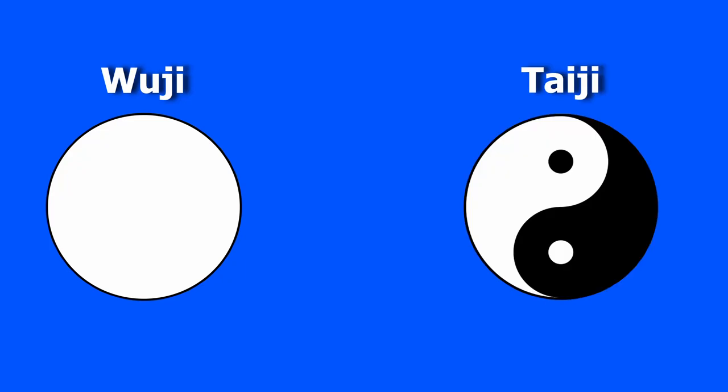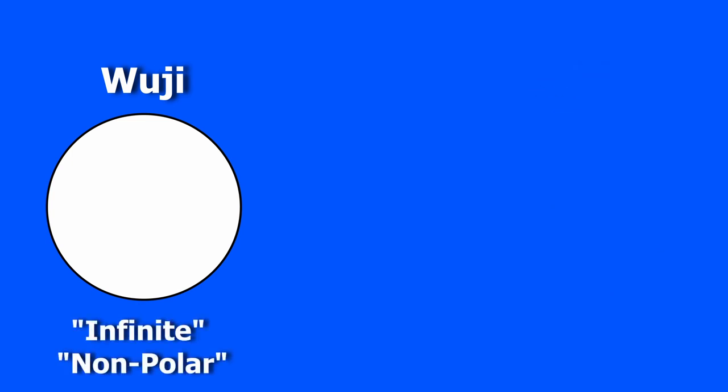Before understanding yin and yang, we first have to understand the larger concept that the yin yang symbol is actually embedded in, which is known as both wuji and taiji. In Chinese philosophy, it is said that before name and form, before light and darkness, before movement and stillness, there was simply wuji — often translated as the infinite and non-polar. Wuji is often thought of as the nothing that came before everything, and it's often represented by an empty circle.